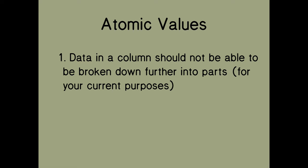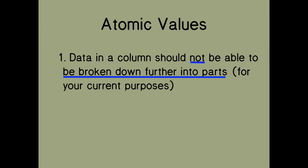The first rule is each row of data must contain atomic values. The second is each row of data must have a unique identifier called the primary key. So what do we mean by atomic values? One thing is that data in a column should not be able to be broken down further into parts — for your current purposes. So this is a somewhat wishy-washy rule, because it depends on what you're trying to do, what you're going to be using this database for.